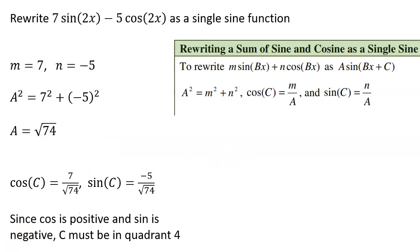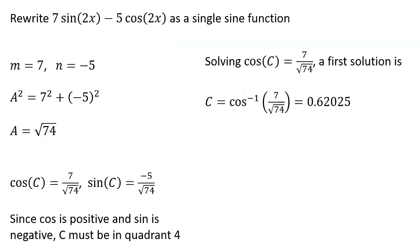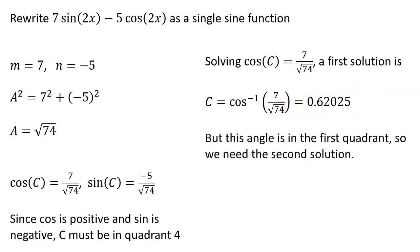Now that we know the quadrant, we can solve either equation. I'll use the cosine function. Solving cosine c equals 7 over the square root of 74, a first solution using the inverse cosine gives 0.62025. However, this angle is in the first quadrant, which is not the solution we need. We need the second solution — a cosine equation will usually have two solutions on the unit circle.